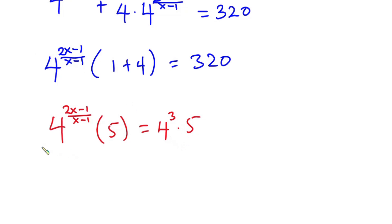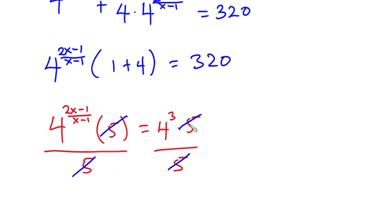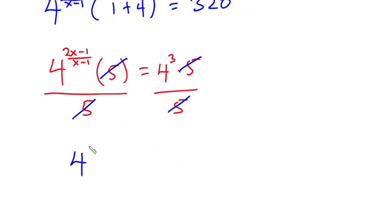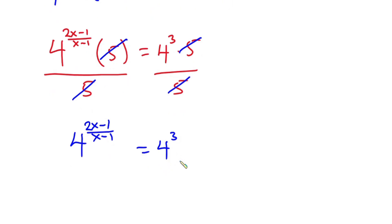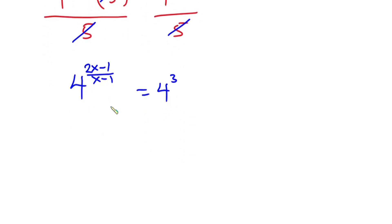So let's go ahead and divide each side of the equation by 5. The 5 cancels on both sides. So we have 4 to the power (2x minus 1) over (x minus 1) is equal to 4 to the power 3. Now you can see that we have the same base, so we can equate the exponents. So we have (2x minus 1) over (x minus 1) is equal to 3.